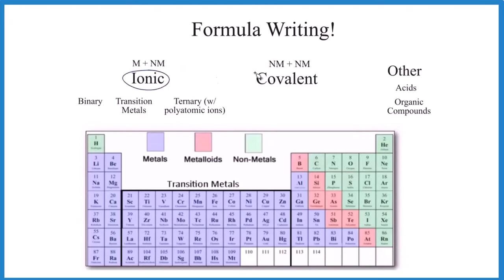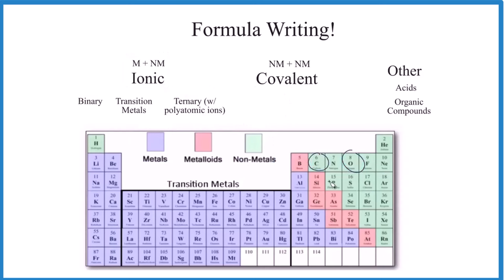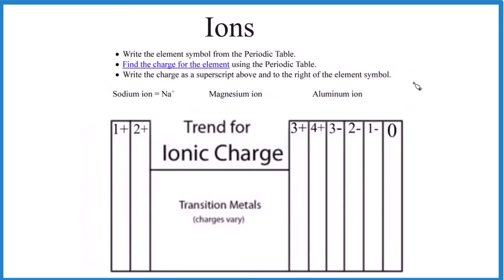You have to understand whether you have an ionic or a covalent compound. If you have a metal and a nonmetal, that's going to be ionic — something like sodium and chlorine, metal plus nonmetal, that's ionic. If you have two nonmetals like CO or CO₂, that's covalent and we use a different set of rules. The covalent rules are probably a lot easier than the ionic, so let's get started with ionic.